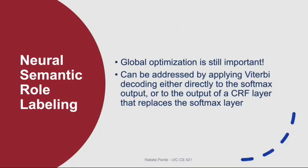Global optimization is still an issue in neural semantic role labeling, and simply using a softmax layer at the end of the model may not effectively handle global constraints. To address this, the softmax layer can be replaced with a CRF layer, and we can apply Viterbi decoding to find the optimal sequence of outputs. We can also apply Viterbi decoding directly to the softmax output, treating the distribution over tags as a lattice, and using known or learned tag constraints as the transition probabilities.